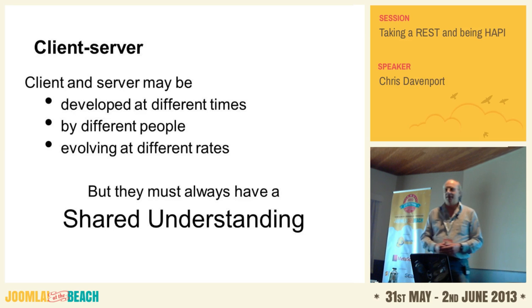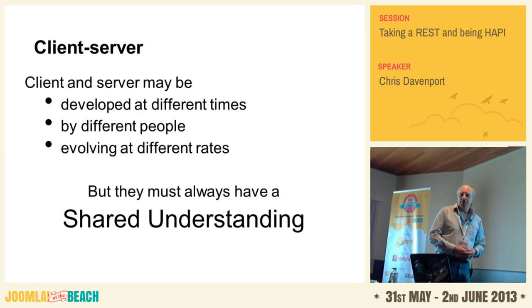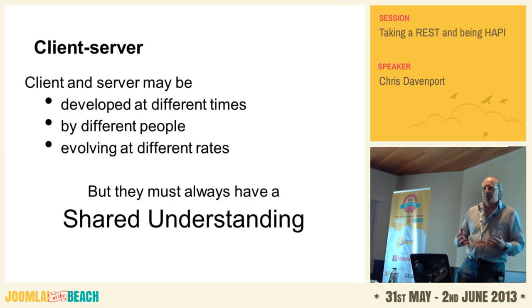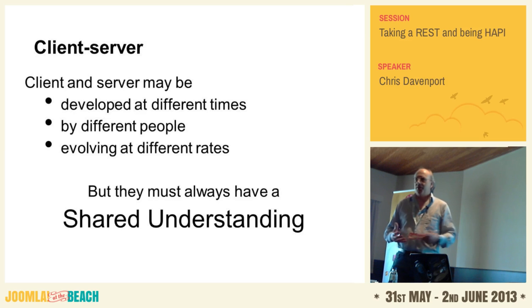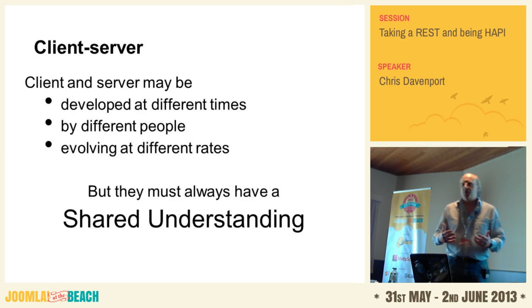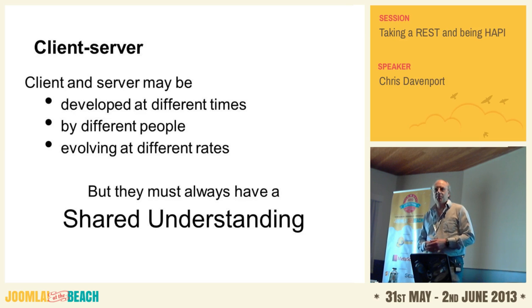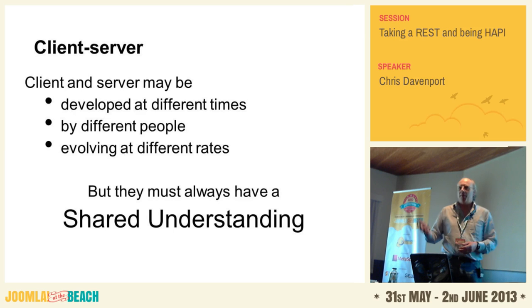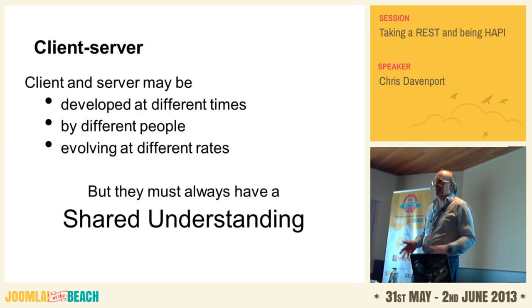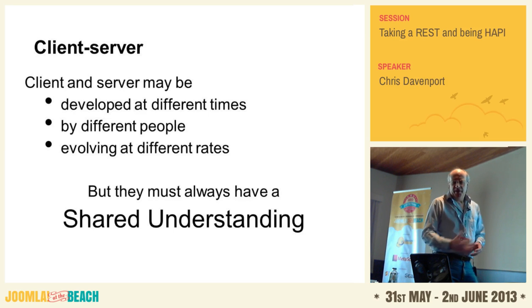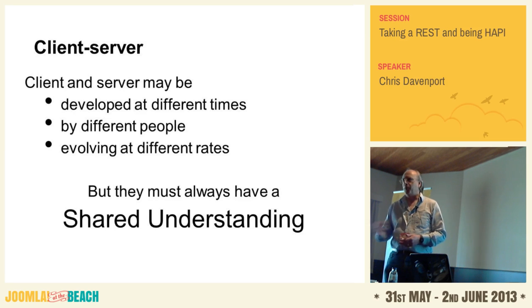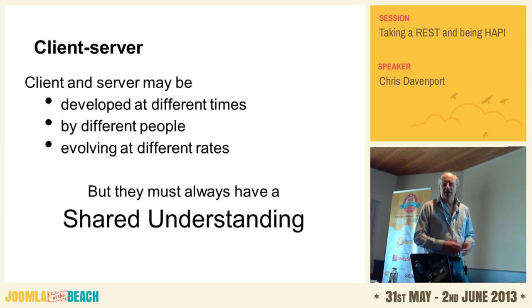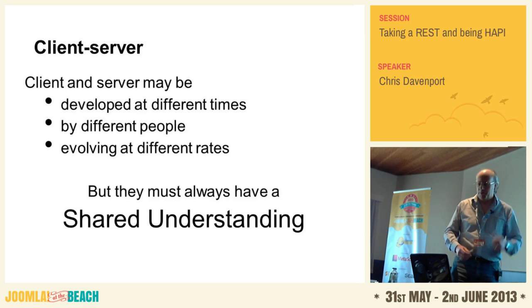The first constraint is pretty obvious: it's a client-server system. Typically your web browser is a client and Joomla is running on a server. But it's important to realize that it's a loosely coupled system — clients and servers need to not depend too tightly on each other. You need to be able to develop them at different times with different groups of people, and they need to be able to evolve at different rates. The way to achieve that is that clients and servers have to develop a shared understanding of the messages going back and forth between them. That shared understanding is really important.